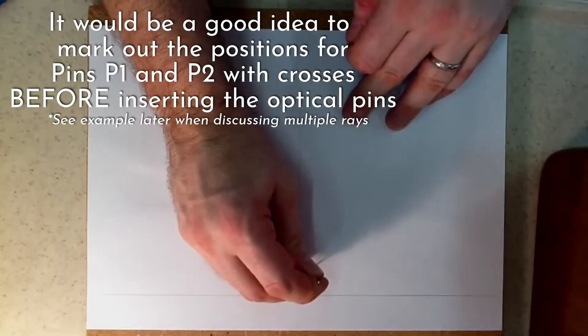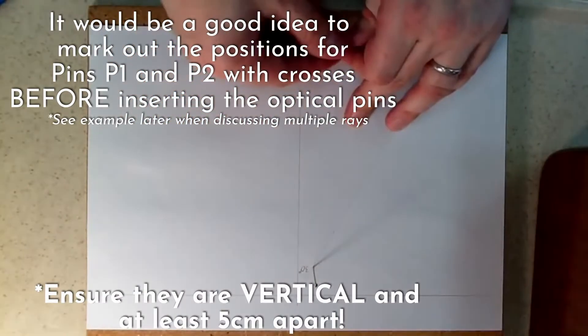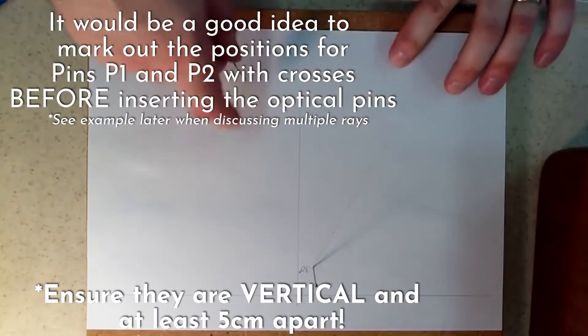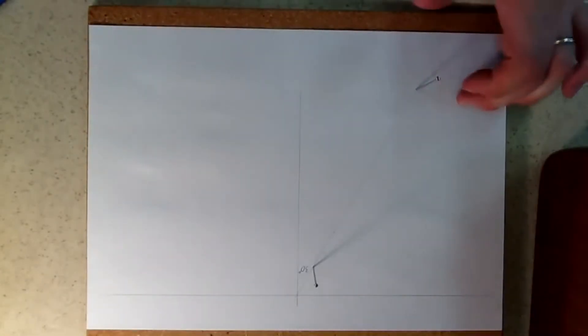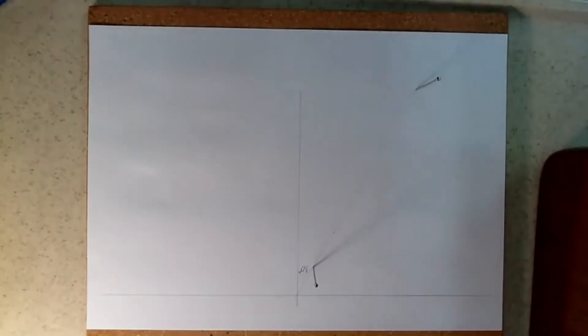Next we insert pins. The optical pins need to be inserted vertically. I am putting one quite close to the mirror. I am putting the other one about as far away as I can whilst it is still on the paper.